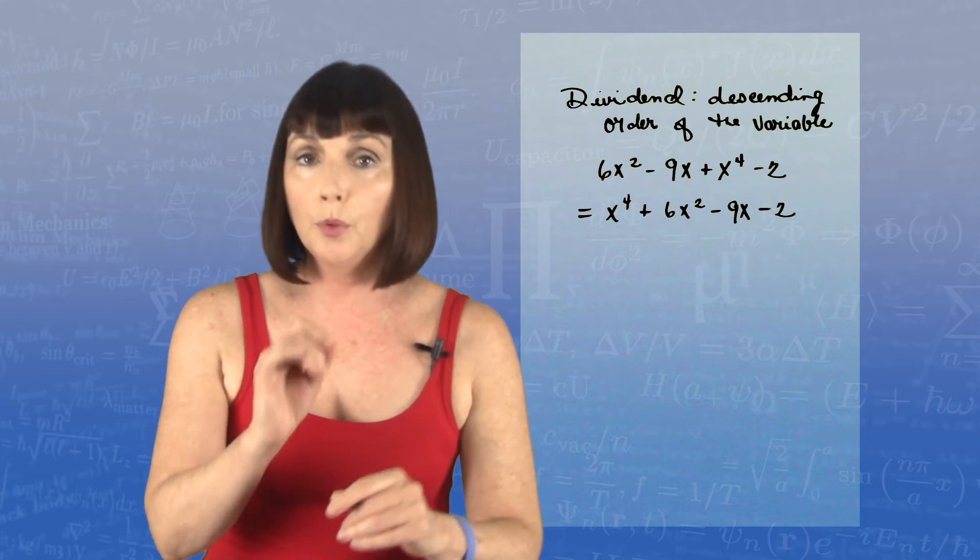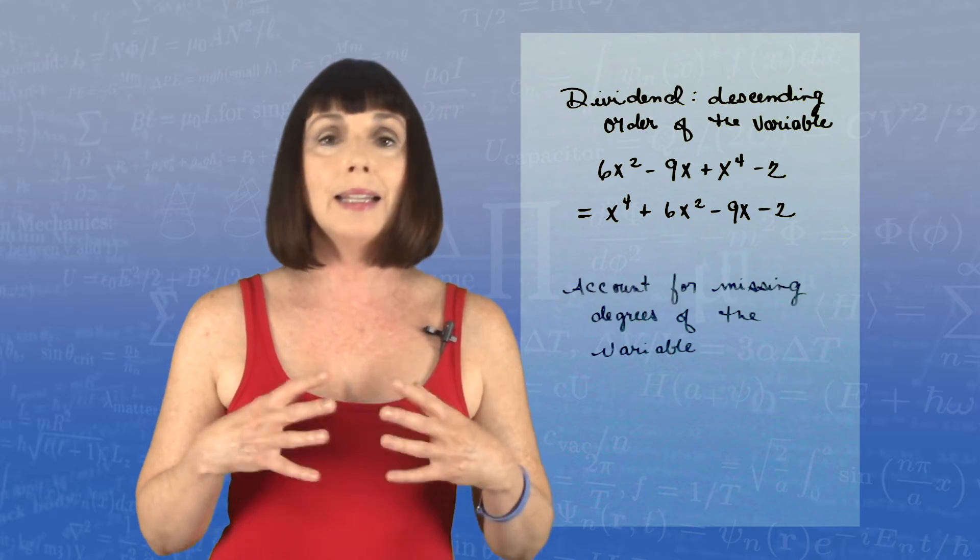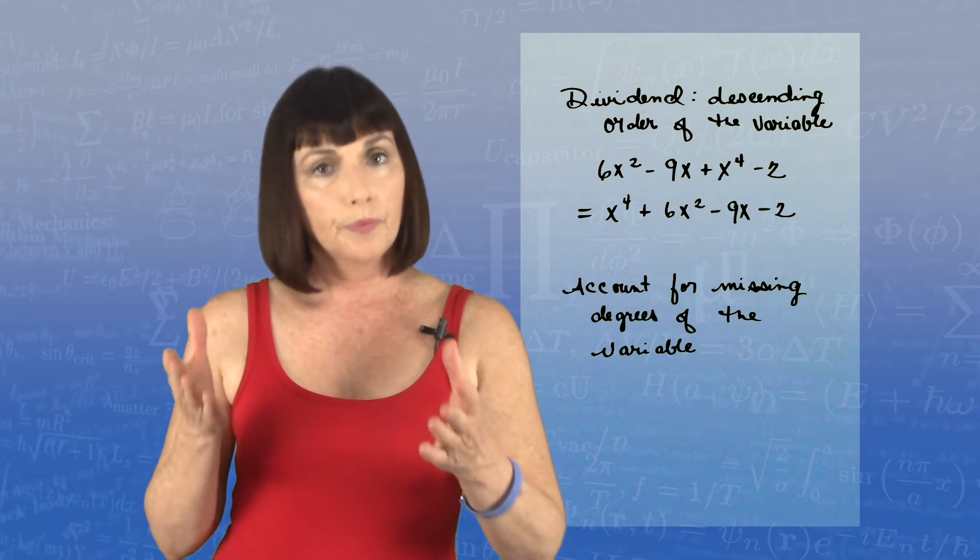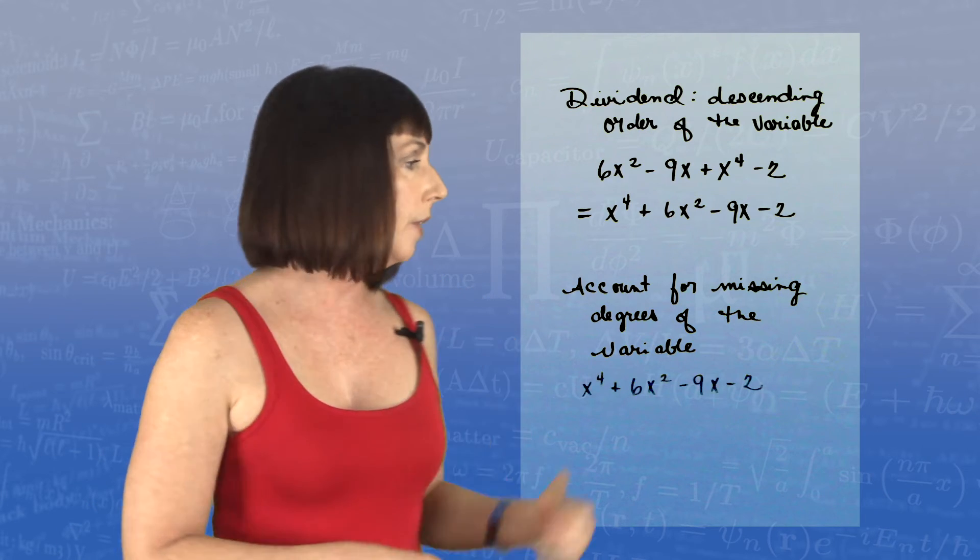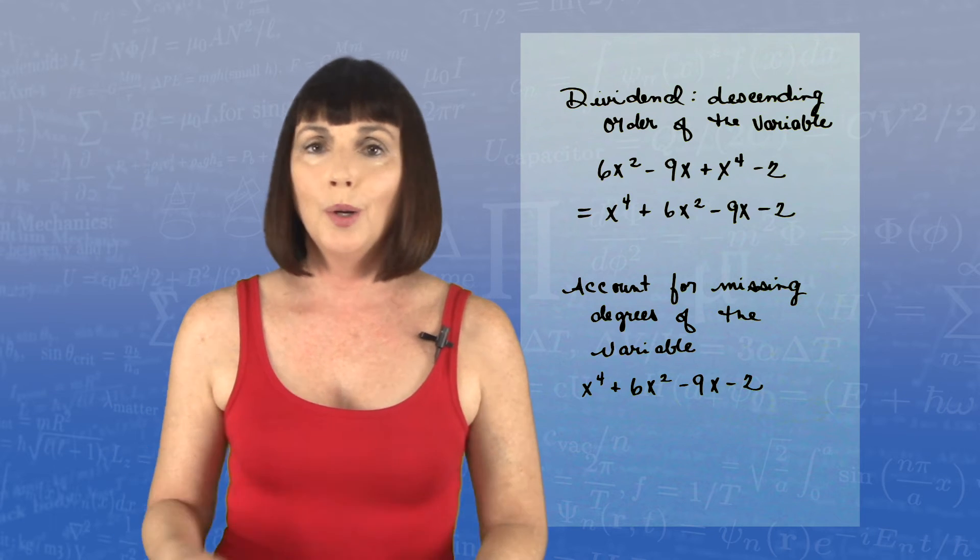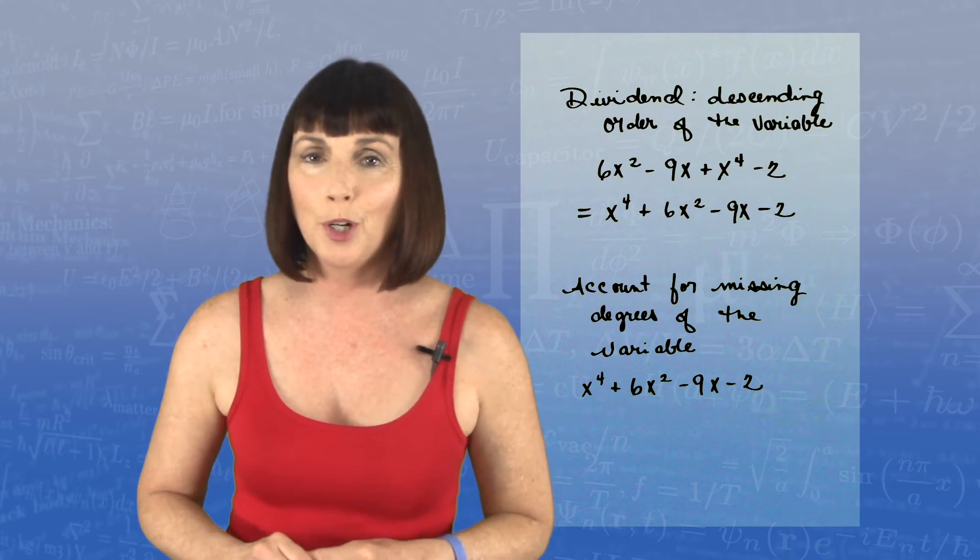Now the other thing that you must do when you're doing polynomial division is account for any missing degrees of the variable. So for example, if we have x to the fourth plus 6x squared minus 9x minus 2, we need to account for that missing x cubed term.